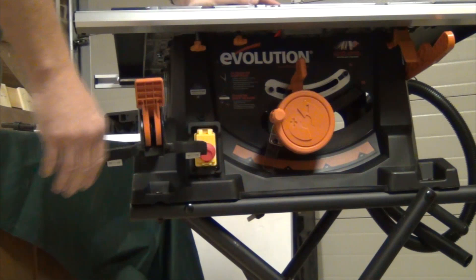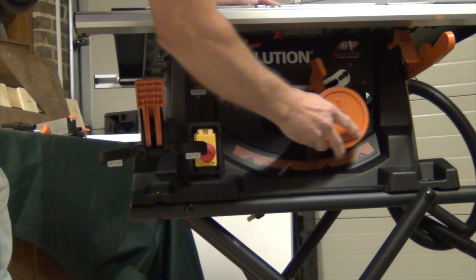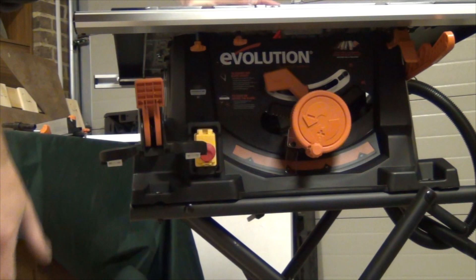The main controls are all located on the front of the saw, very easy to get to. We can bevel the blade up to 45 degrees. Everything works very easily.